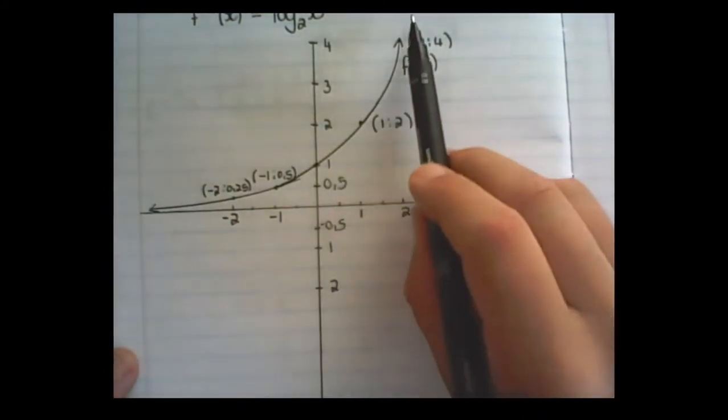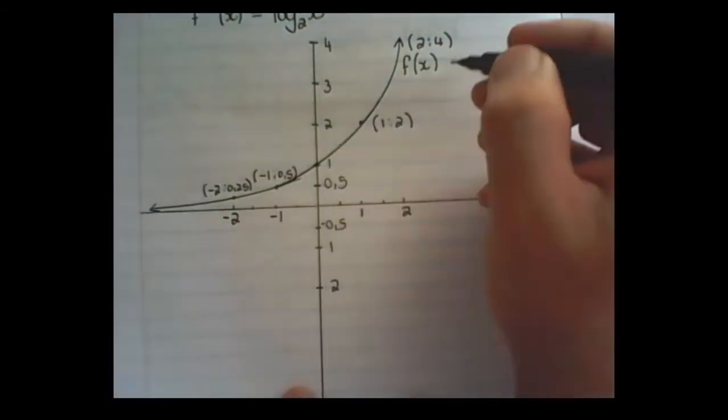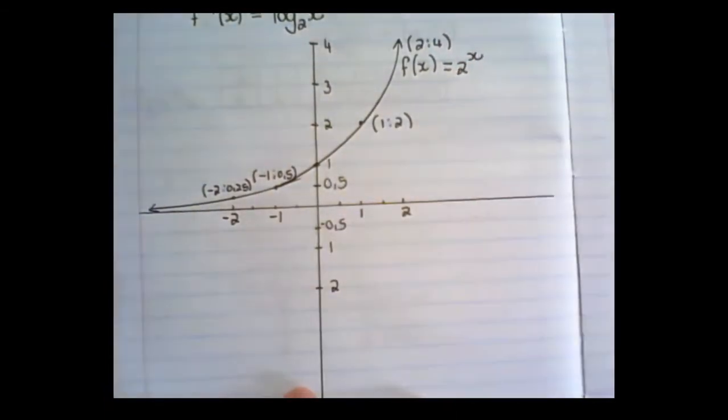So this graph now represents the exponential function of f(x) equals 2 to the power of x.